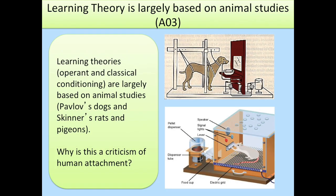Another criticism is that the learning theory is largely based on animal studies, like Pavlov's dogs and Skinner's rats. Animals are not as sophisticated as humans and are not sentient beings in the same way, according to some critics. It is therefore hard to extrapolate results from animal studies to humans — it's a stretch too far, and perhaps humans have developed other mechanisms which determine attachment rather than simply classical and operant conditioning.